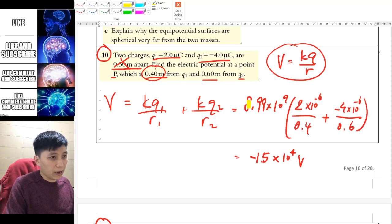The general equation is V equals kq over r. So the total electrical potential will be kq1 over r1 plus kq2 over r2. You just add the two potentials together. The answer should be negative 1.5 times 10 to the power of 4 volts.